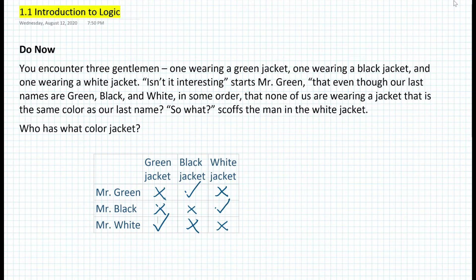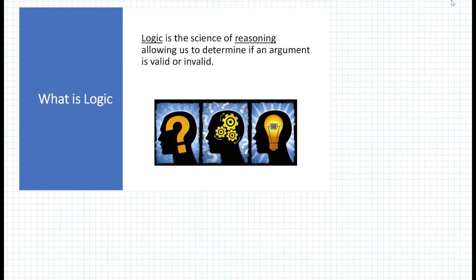How were we able to come to this conclusion? We simply applied logical thinking, and hence this is the introduction to logic. Logic is the science of reasoning, allowing us to determine if an argument is either valid or invalid. Often in mathematics, specifically in logic, we use the statement true for valid, and for invalid we use the statement false.